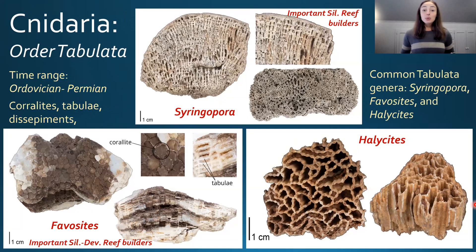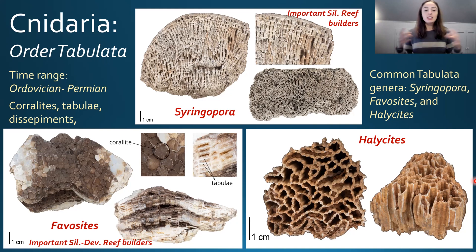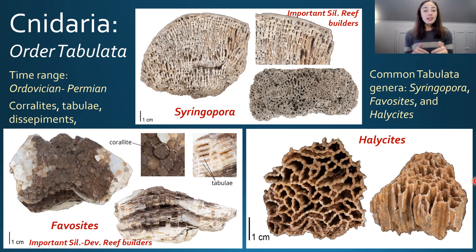Tabulata were the first corals to dominate in the early Paleozoic. They evolved in the Ordovician and went extinct during the Permian-Triassic extinction. Structurally, they have coralites — skeletal cups representing each polyp — tabulae, which are horizontal table-like layers or laminae within each coralite, and dissepiments, which are vertical separations between the tabulae. This is why they're called tabulate corals.